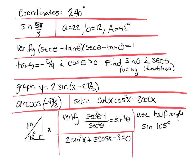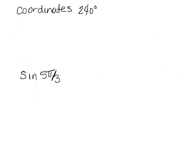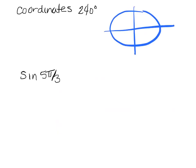So we start with a pretty easy one. The coordinates are 240 degrees, so first I have to figure out where 240 degrees is. 240 would be right before 270, so we're looking where x is short and y is long. So the coordinates: x is short, that's going to be negative one-half, and y is long, which is negative root 3 over 2.